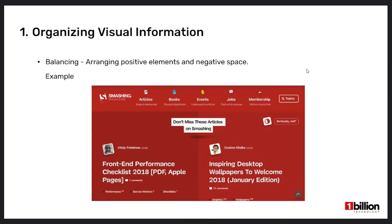When a design is unbalanced, the individual elements compete with each other and every element is calling for attention. In this example, attention is drawn to the individual elements instead of clarifying how they're related to each other. It's very difficult to look at because there's too much negative space between the elements and the related items don't hold together. The user will get distracted and their eyes keep going back and forth between the individual elements.